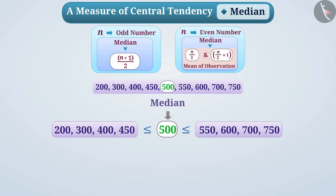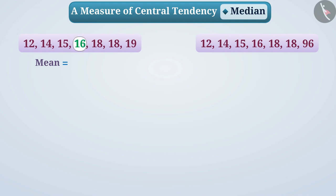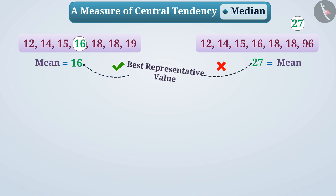Now, let's understand some characteristics of the median. Look at these two groups of data. The mean of the first group will be 16, which is a best representative value. Except for one observation in the second group, all observations are similar to the observations of the first group, but that one observation is much larger than the other observations. In this case, the mean would be 27, which cannot be called a good representative value.